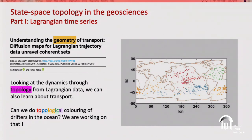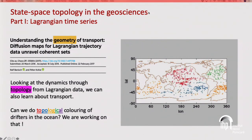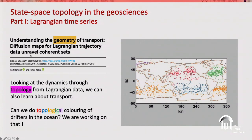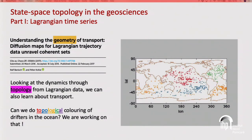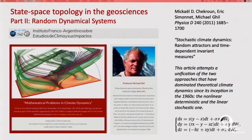There is a 2017 paper by two mathematicians — one Spanish, one from Germany and the United Kingdom — studying the geometry of transport using a technique based on Froyland's analytical framework. Looking at dynamics through topology from Lagrangian data, we have seen that in analytic problems we can learn about transport. The idea is: can we do topological coloring of drifters in the ocean? We are working on this.